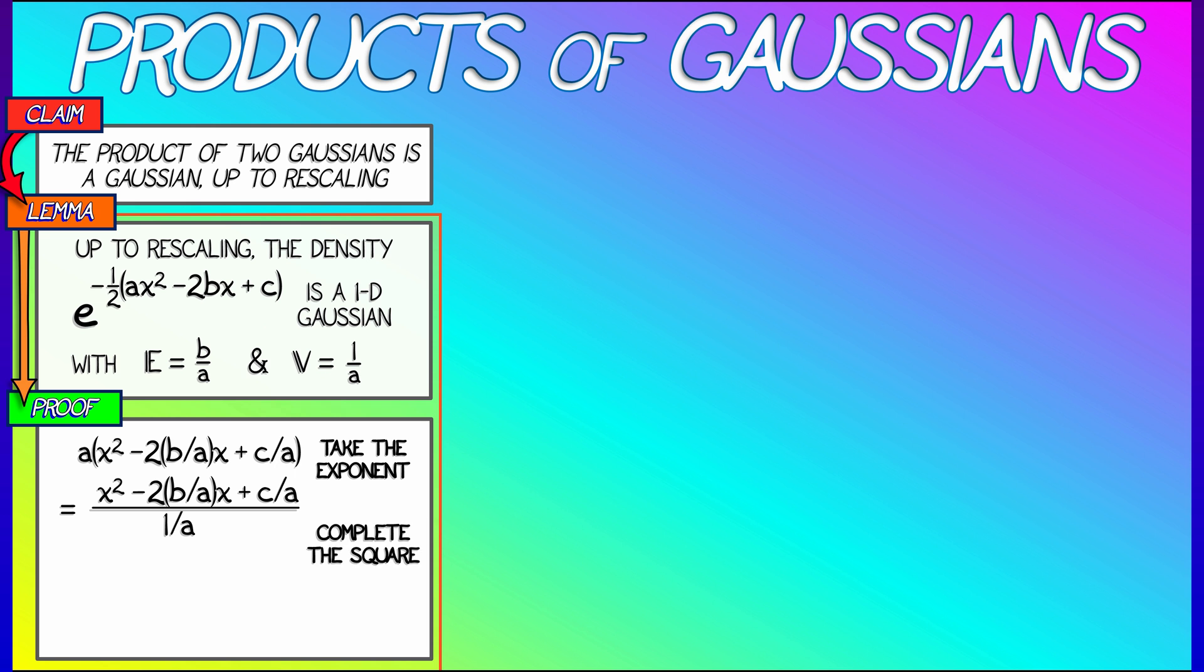Now I'm going to do completing the square, and I'm going to get quantity x minus b over a squared divided by 1 over a plus some constant. Now when I exponentiate this with a minus one-half in front, I get a Gaussian whose mean is b over a and whose variance is what's in the denominator, the 1 over a. Now what about all that constant stuff that's left over? We're not going to care about that because when I exponentiate that, that by exponent laws is just some rescaling out in front.